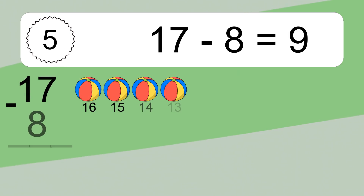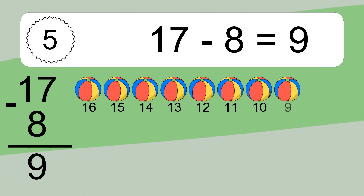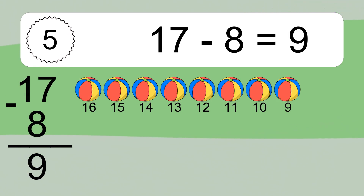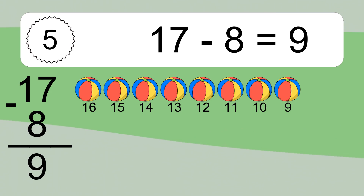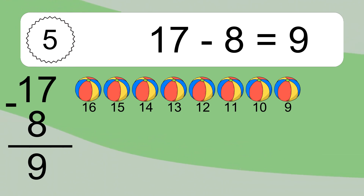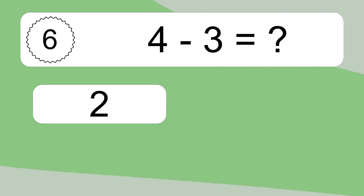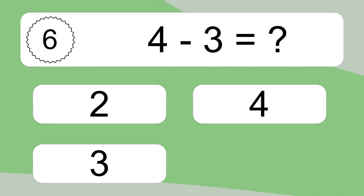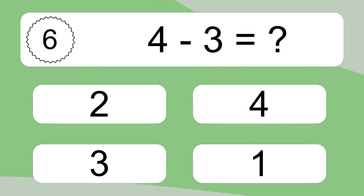17 minus 8 equals what? 17 minus 8 equals 9. Let's count it: 16, 15, 14, 13, 12, 11, 10, 9.